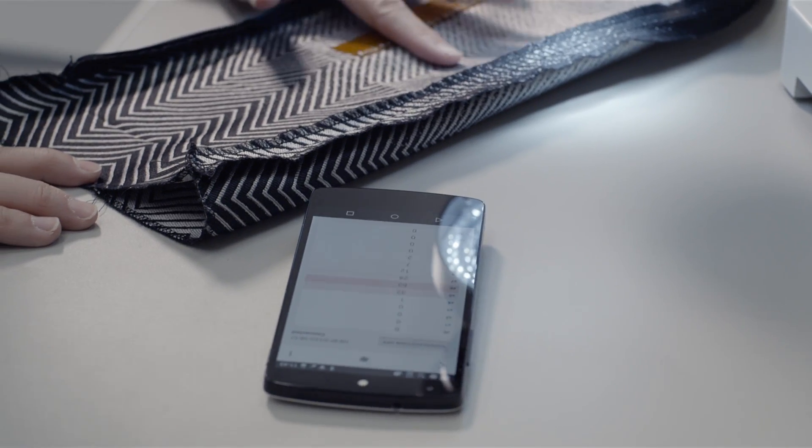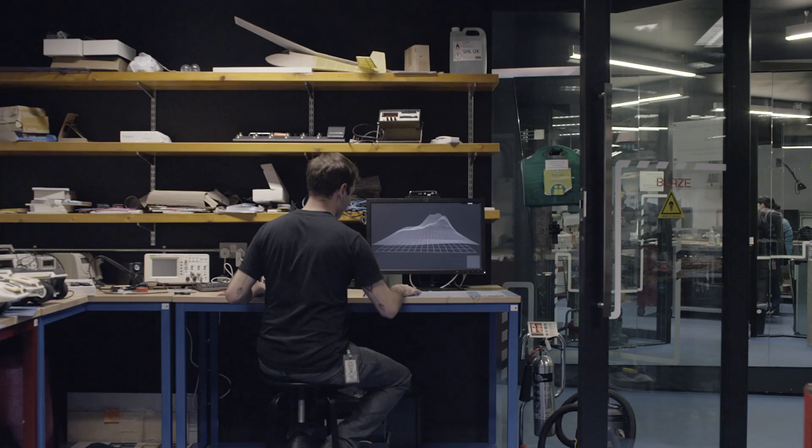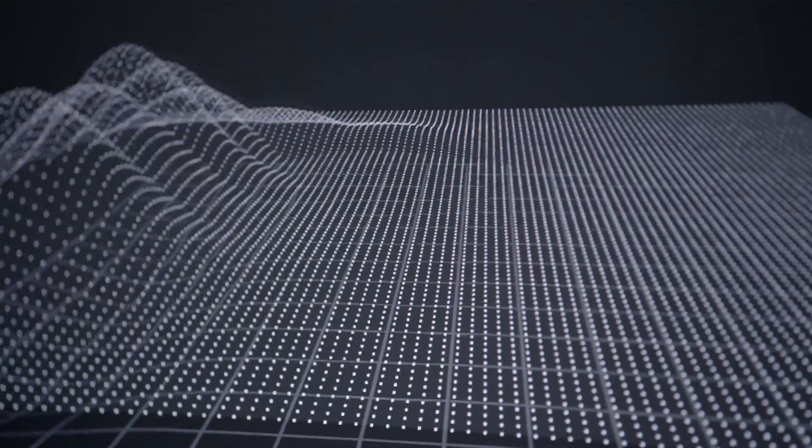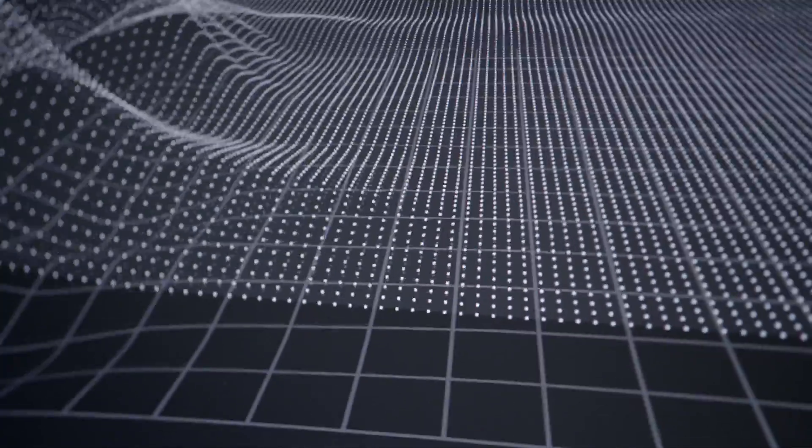The idea that Jacquard is an interface that is blended into the clothing that we wear has an implication in the way that you would use services, products, applications, and anything that we do through our devices. It's somehow getting the technology out of the way and making interactions more natural and more seamless.